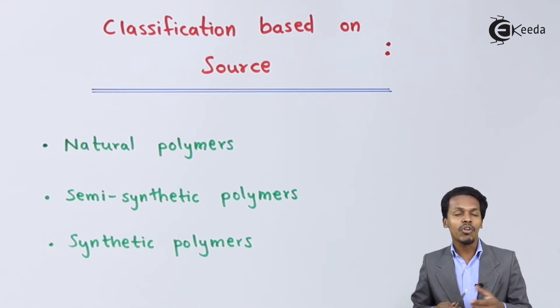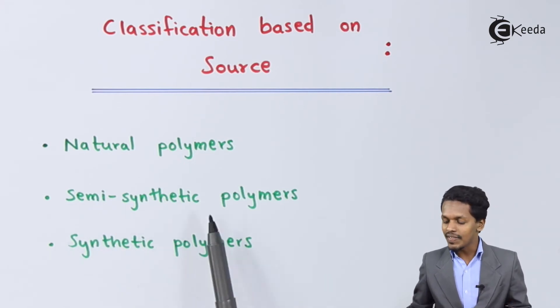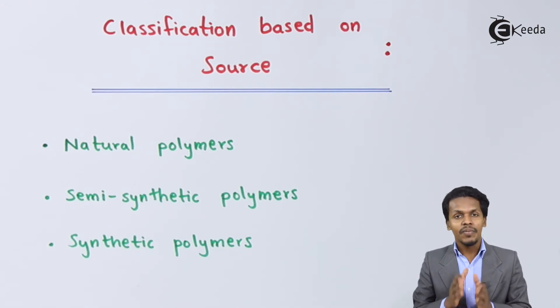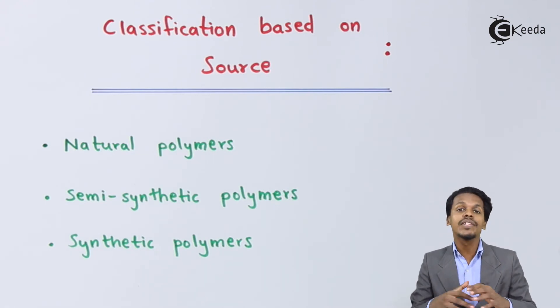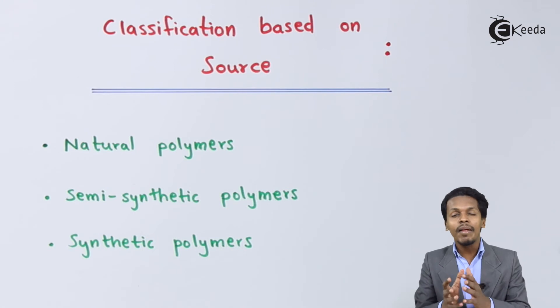Now let me talk about the next one - semi-synthetic polymers. These are modified polymers obtained from nature. They have different appearance and different tensile strength. These different properties are made by modifying natural polymers, and that's why they're called semi-synthetic polymers.